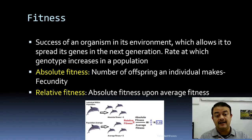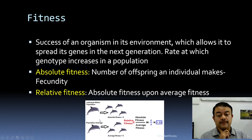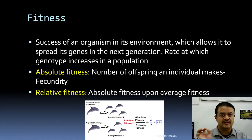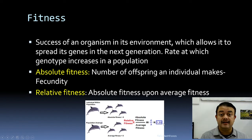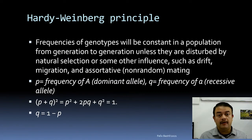For example, if a dolphin individual has four offspring while the population average is three, that individual's relative fitness is 4/3 = 1.33. The Hardy-Weinberg principle, which we've already covered, acts as the null hypothesis of evolution: p² + 2pq + q² = 1, provided there is no selection, drift, migration, or assortative mating.